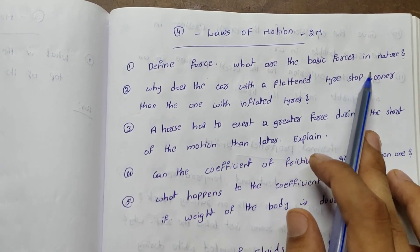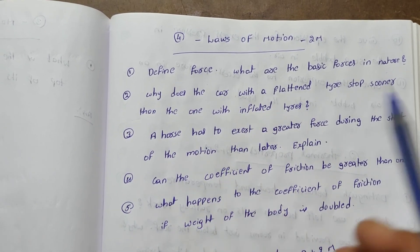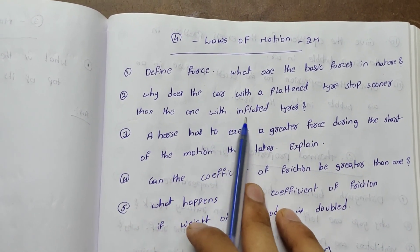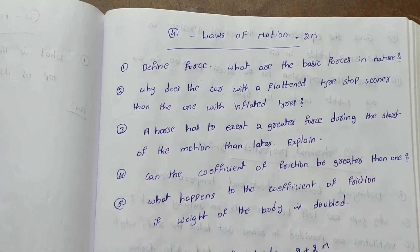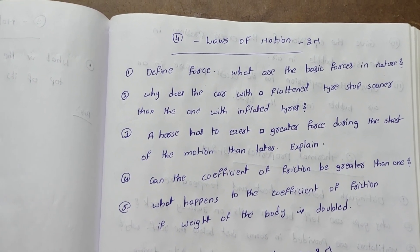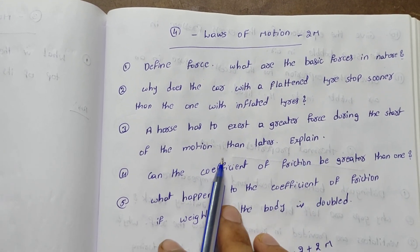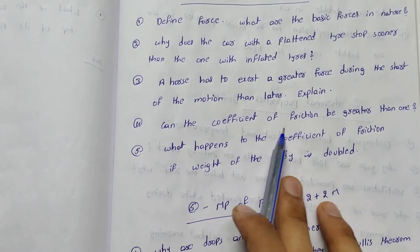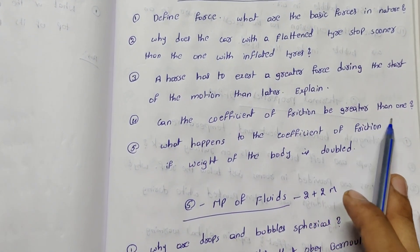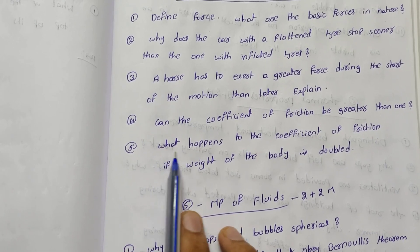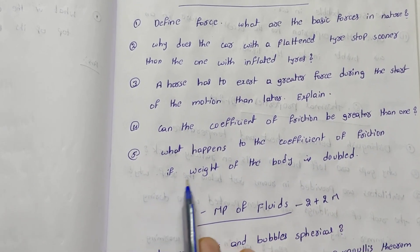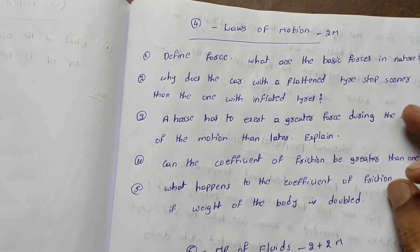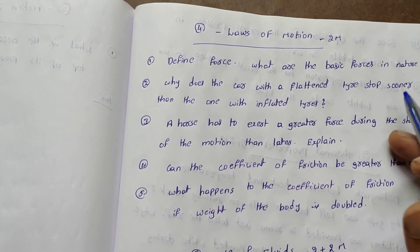What are the basic forces in nature? Why does a car with a flat tire stop sooner than one with inflated tires? A horse has to exert a greater force during the start of motion than later — explain. Can the coefficient of friction be greater than one? What happens to the coefficient of friction if the weight of the body is doubled? First preference for key questions is the law of motion.